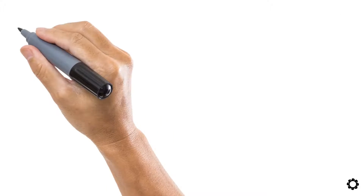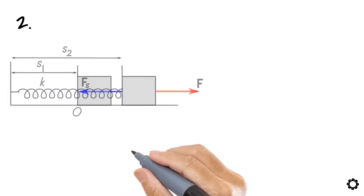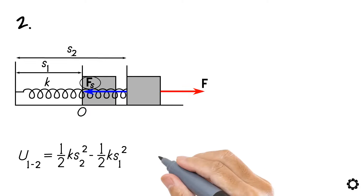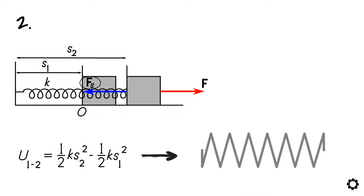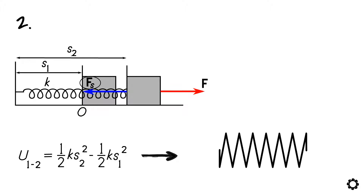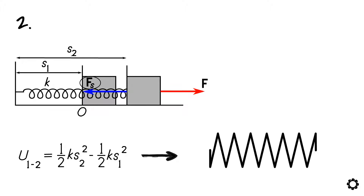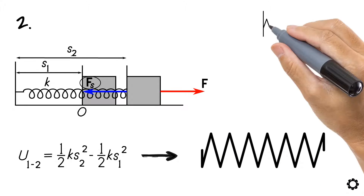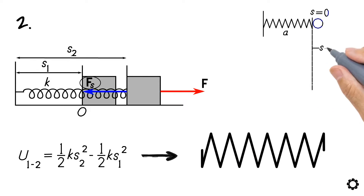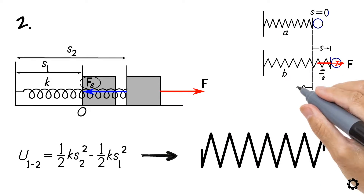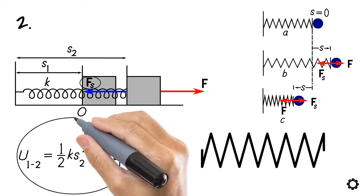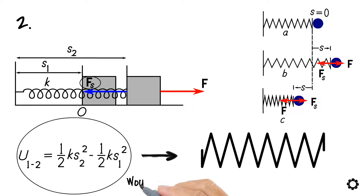Another quite typical conservative force is the spring force, because the done work is only related to the amount of compression or stretching of the spring. Like in the case of lifting the box, we could do this work by following numerous paths, but still the necessary work would be the same.